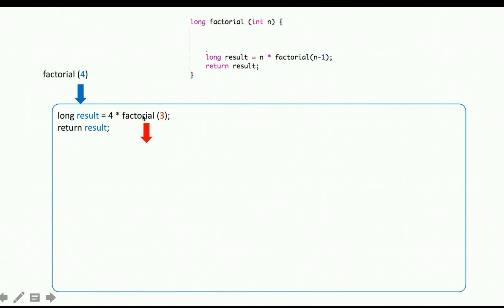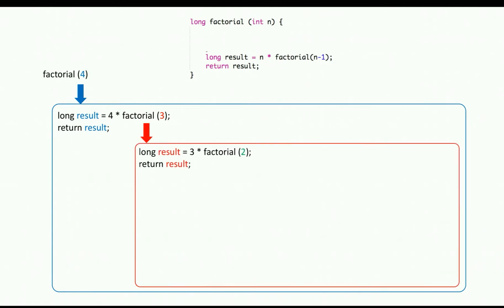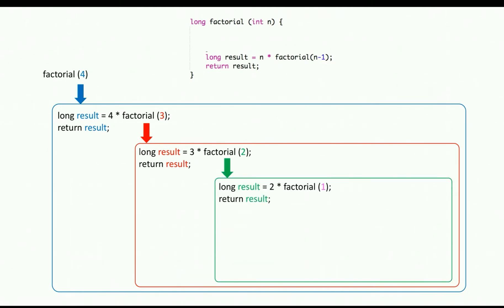Once it makes that factorial call, it books another piece of memory for the new call. Now we're in the same function again, but this call has its own separate result variable. With n equal to 3, it computes 3 times factorial of 2, which again triggers another call. A green rectangle is booked for that call. Now n is 2, so it tries to assign 2 times factorial of 1 — another function call — booking yet another piece of memory.